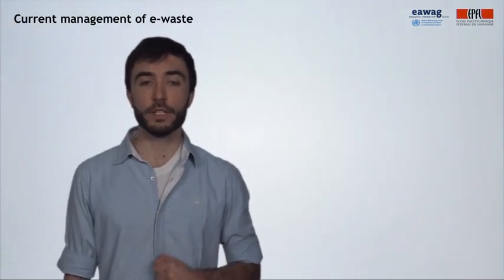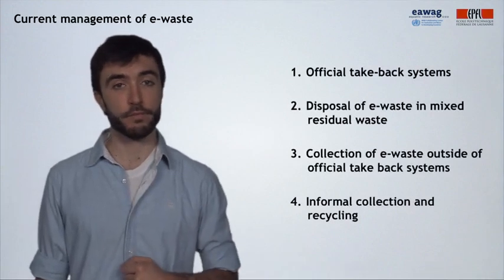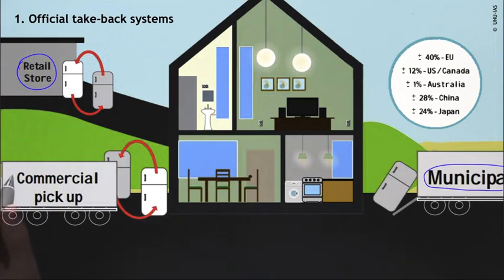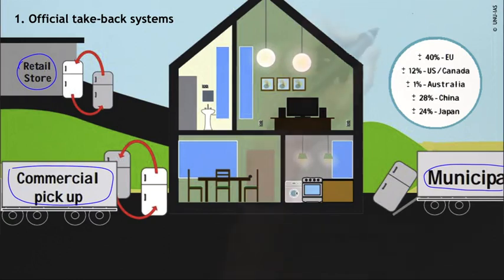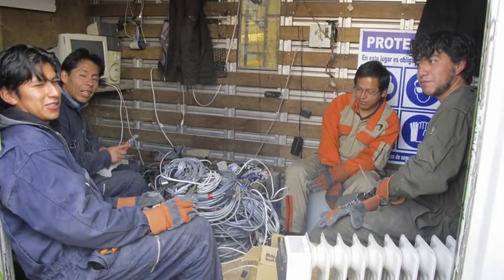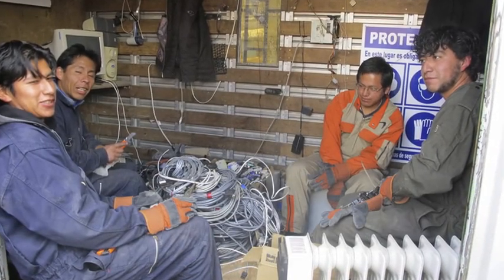So what happens currently with e-waste? We distinguish four main practices. The first practice consists of official take-back systems. In this case, e-waste is mostly collected by municipal collection services, retailers such as stores or supermarkets, or commercial pickup services. The collected e-waste goes to state-of-the-art treatment facilities, which recover the valuable materials in an environmentally sound way and reduce the negative impacts. Here we see the percentages of the total generated e-waste that is annually handled like this in several countries. This picture shows an operator in a collection point for e-waste in Switzerland, whereas in the second picture we see operators of an e-waste recycling company in Bolivia.